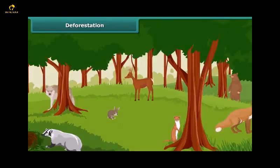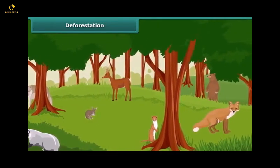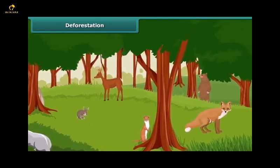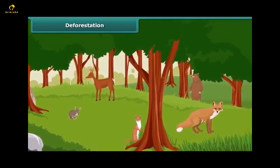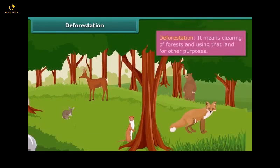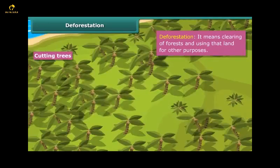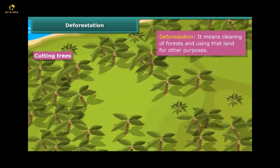Friends, a great variety of plants and animals exists on Earth. They are essential for the well-being and survival of mankind. But a major threat to the survival of these organisms is deforestation. Deforestation is the clearing of forests and using that land for other purposes.